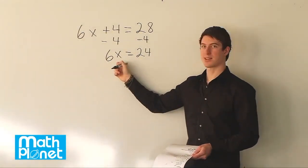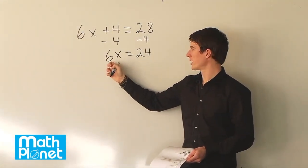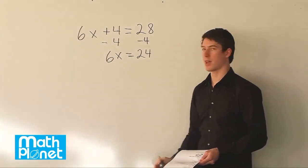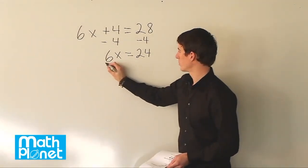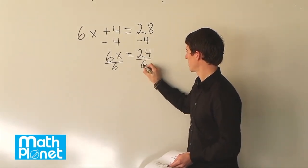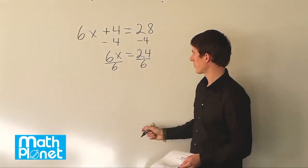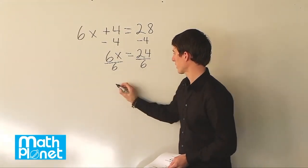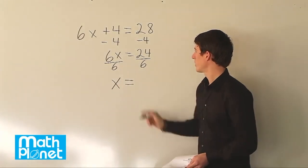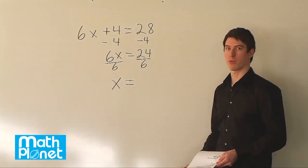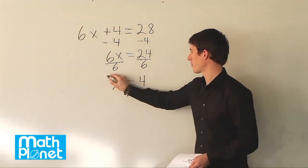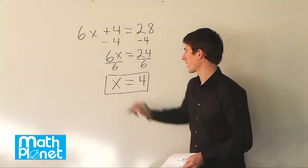And now we have this 6 times x. So the inverse operation of multiplication, we have multiplication here, the inverse operation of that is division. So we need to divide both sides by 6. So we have multiplication, we need to do the inverse of that which is division. So 6 over 6 just gives us x which is what we're looking for. And then we have 24 over 6, and 24 divided by 6 is just 4. So we have our final answer here of x equals 4.